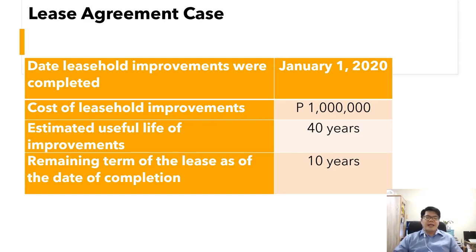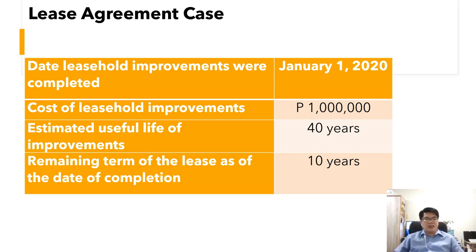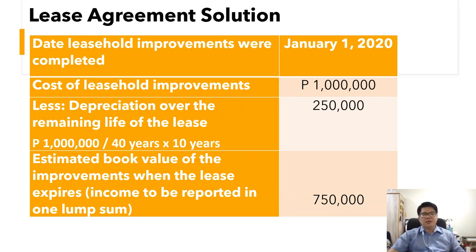Here is a leasehold improvement case. The improvement was completed on January 1, 2020. The cost of the leasehold improvement is 1 million pesos, with an estimated useful life of 40 years. The remaining term of the lease as of the date of completion is 10 years, meaning the lessor will enjoy the remaining 30 years of the improvement. The question is: how much is the income benefit to the lessor from the 1 million cost?